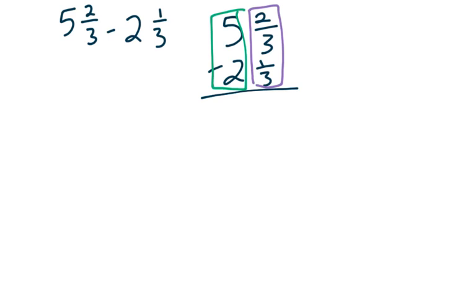So we have 2 minus 1 is 1 and our denominator stays the same. And then 5 minus 2 is 3. It is literally that simple.